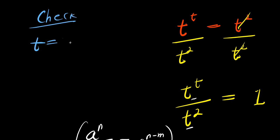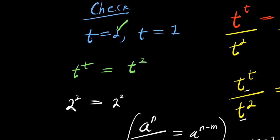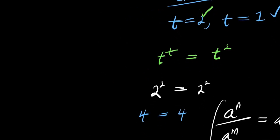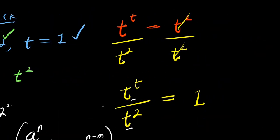We have two solutions: t equals 2 and t equals 1, and the original equation is t to the power of t equals t to the power of 2. When t equals 2: 2 to the power of 2 equals 2 to the power of 2, which is 4 equals 4. When t equals 1: 1 to the power of 1 equals 1 to the power of 2, which is 1 equals 1 — since 1 to any power is 1. Both solutions are confirmed correct. Thank you and goodbye.